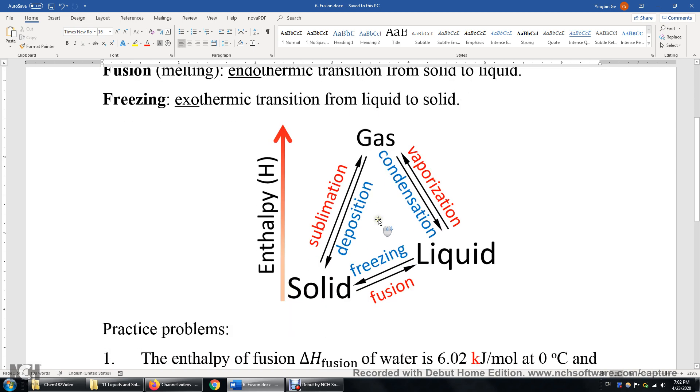Now let's look at the enthalpy diagram again. Between solid and liquid, the two processes are fusion and freezing. Enthalpy increases from solid to liquid. Enthalpy decreases from liquid to solid. Same here. Enthalpy increases during sublimation and vaporization. Enthalpy decreases during condensation and deposition.